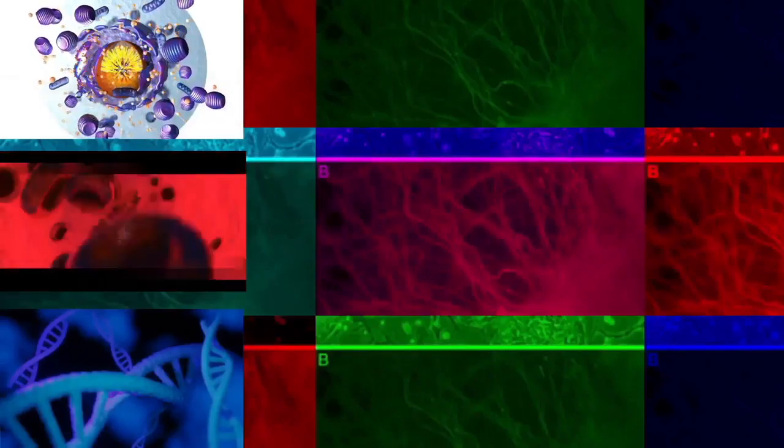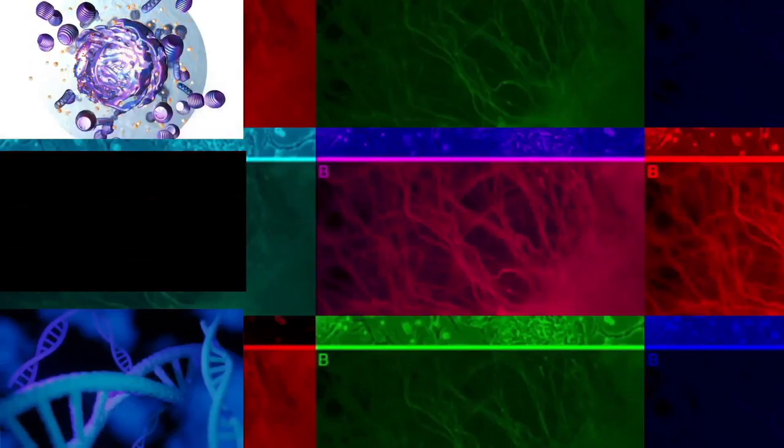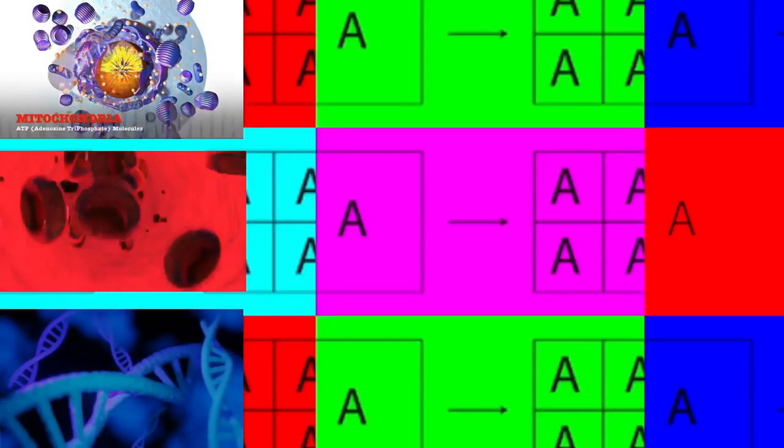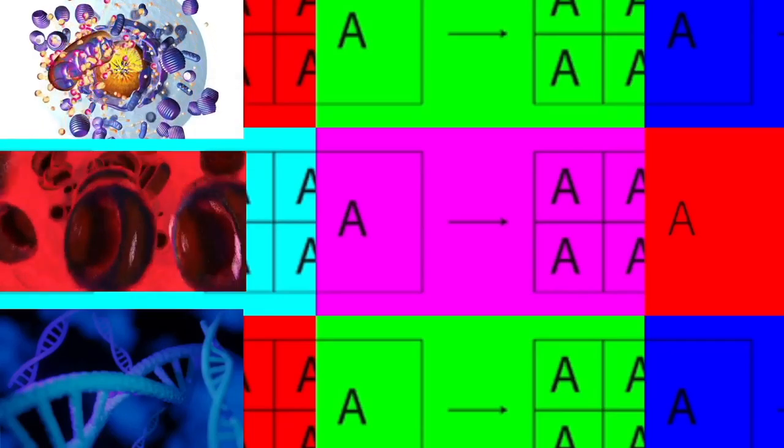During mitosis, the chromosomes, which have already duplicated, condense and attach to spindle fibers that pull one copy of each chromosome to opposite sides of the cell. The result is two genetically identical daughter nuclei. The rest of the cell may then continue to divide by cytokinesis to produce two daughter cells.